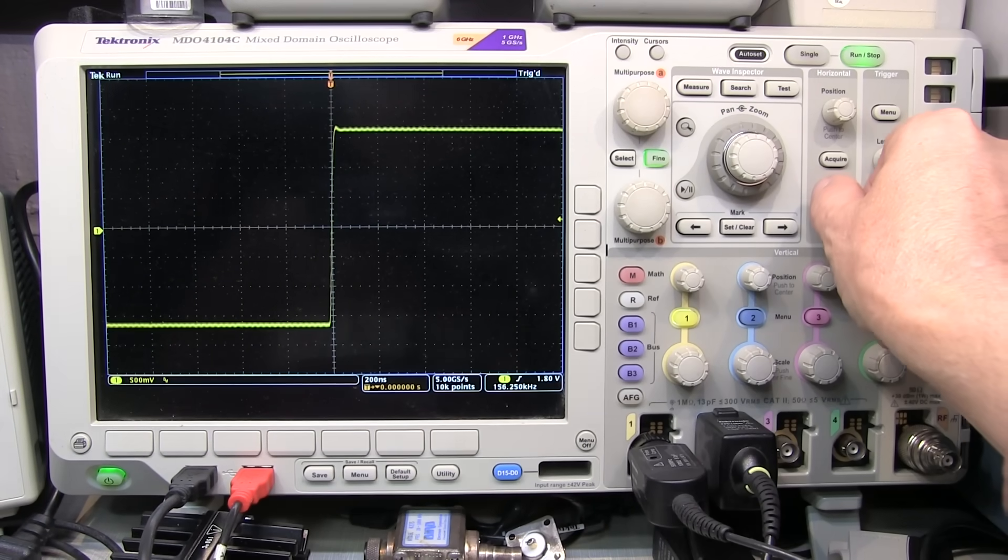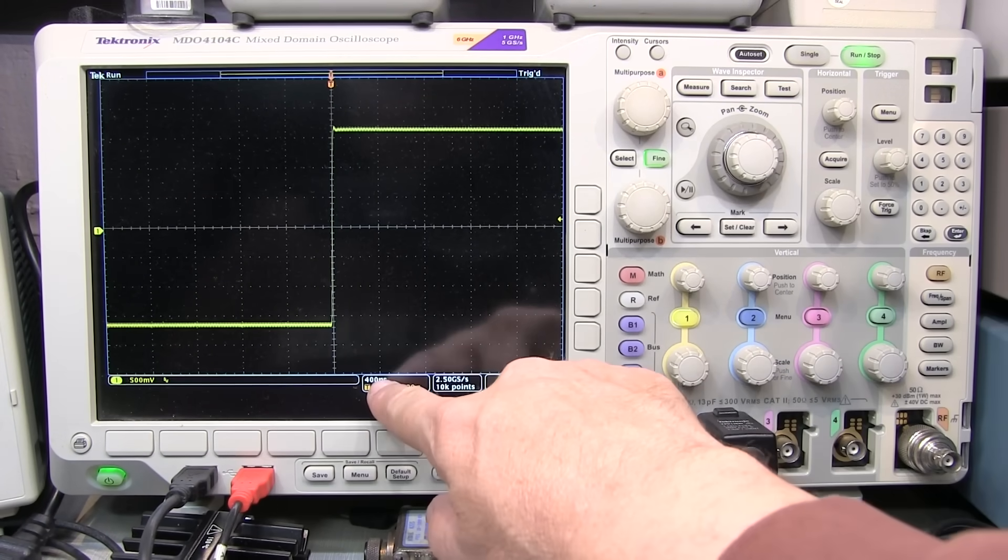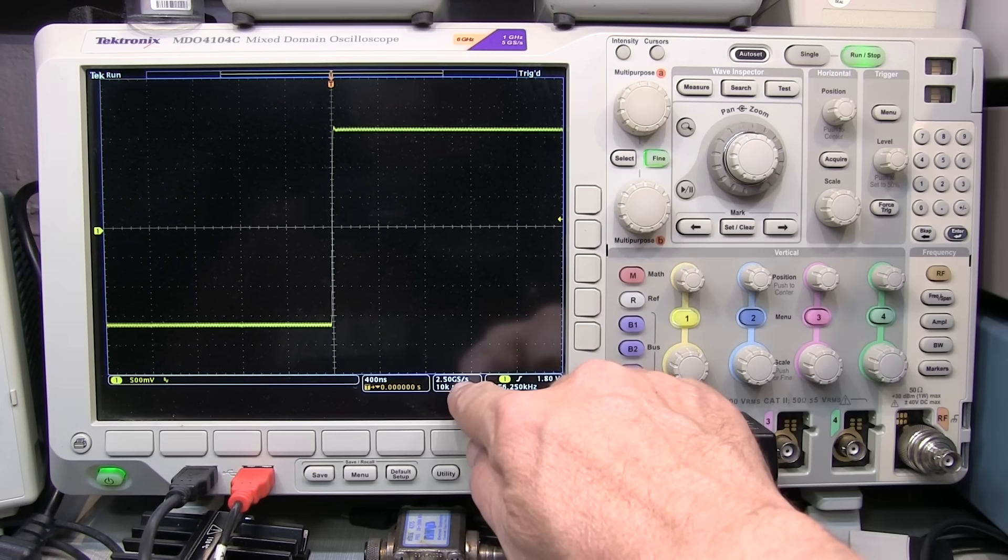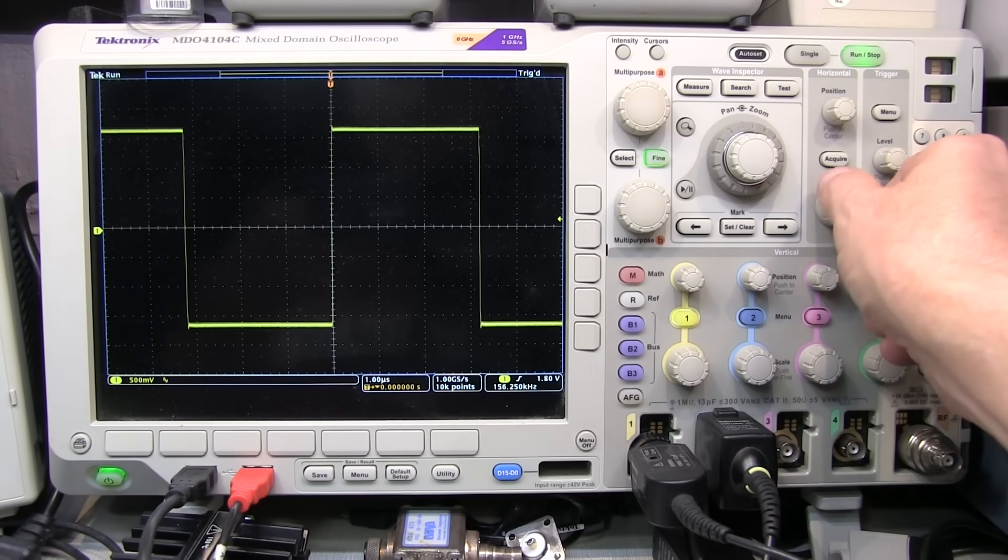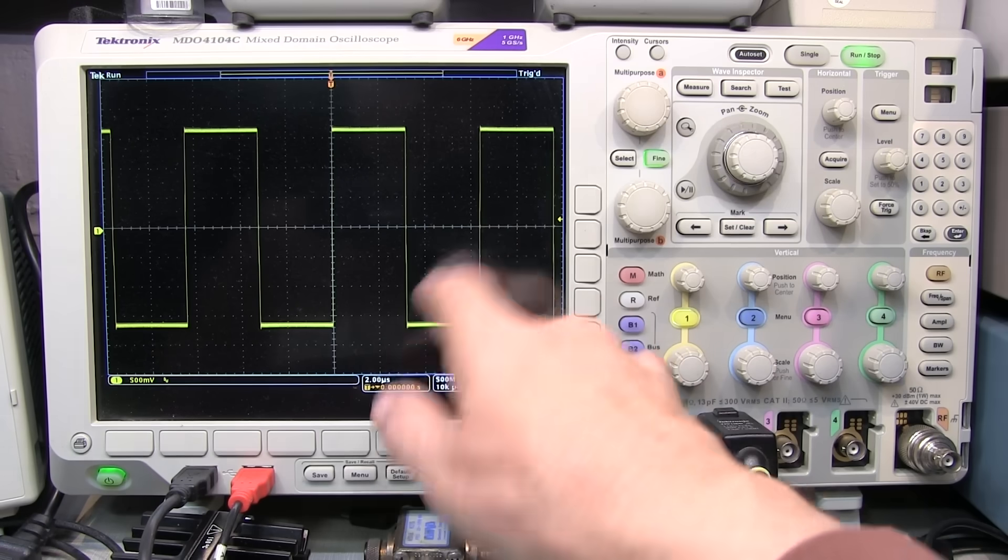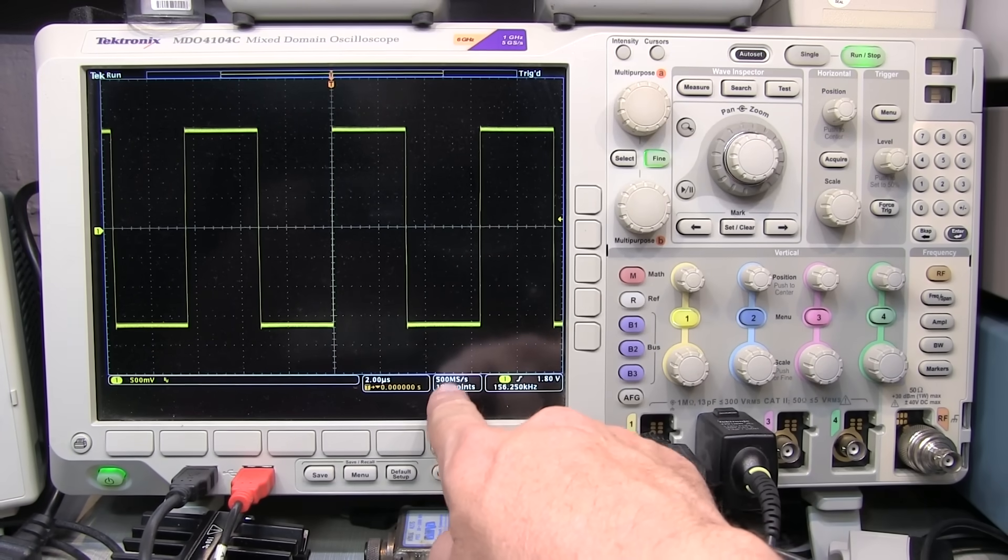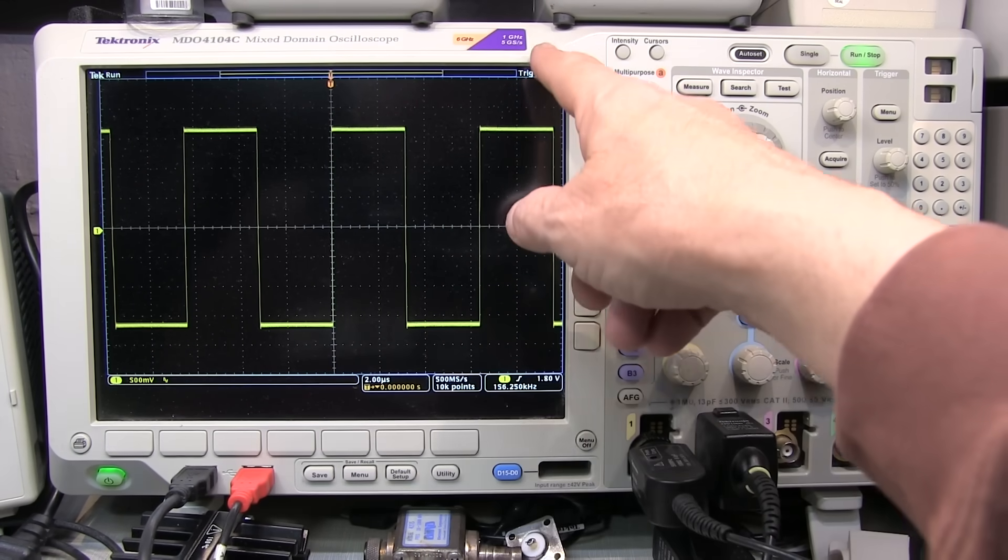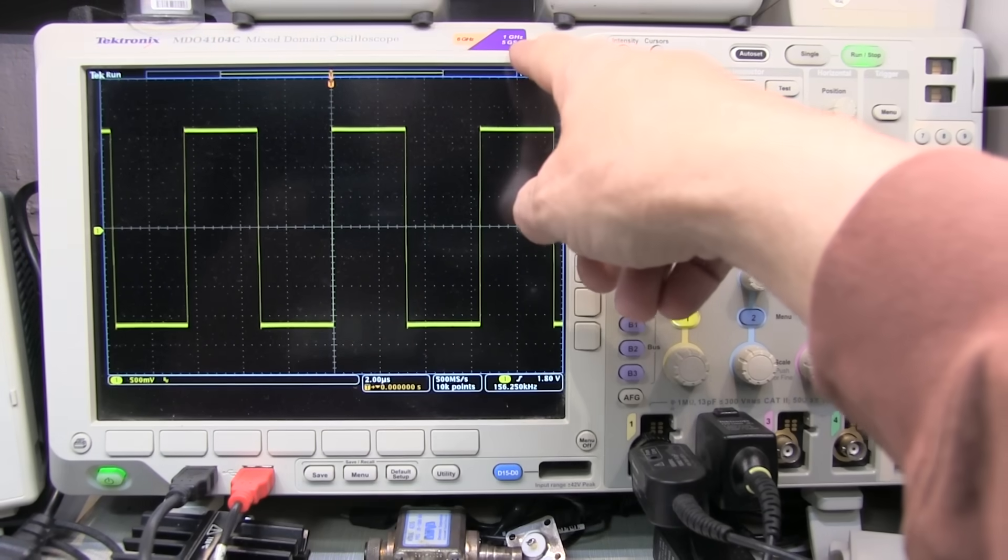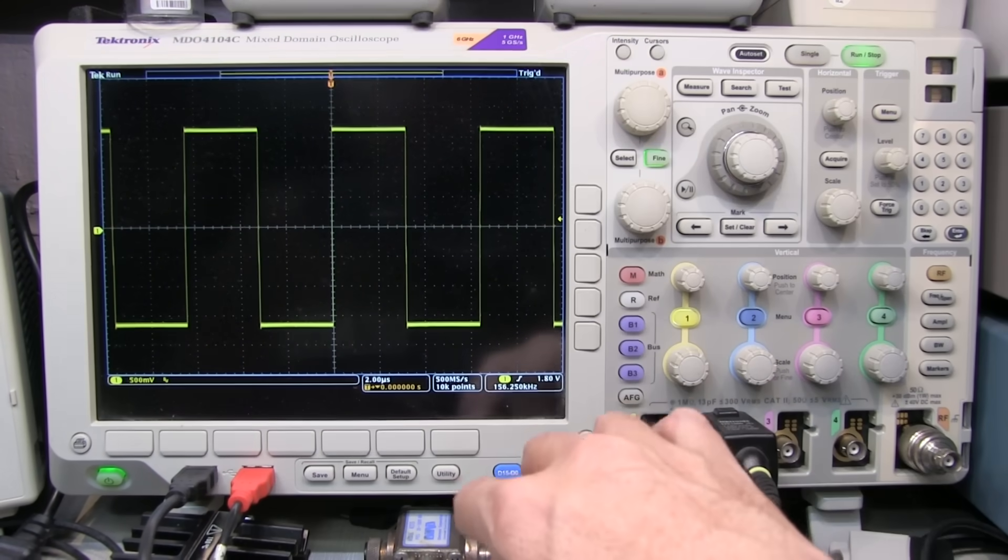As I work my way down, you can see that now as I get slower at 400 nanoseconds per division, I've cut the sample rate to two and a half to fill up those 10,000 points. As I keep going down, you can see that now at this two microseconds per division, my sample rate has dropped. So I'm essentially throwing away nine points for every 10 that I capture in order to build this waveform.